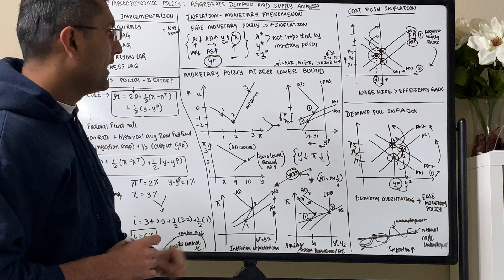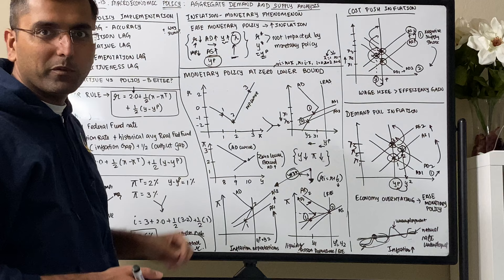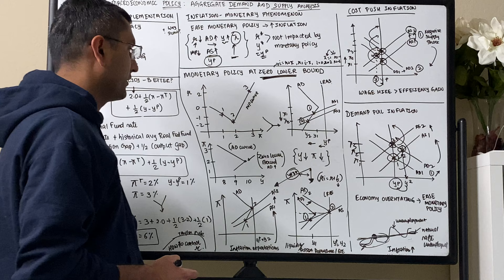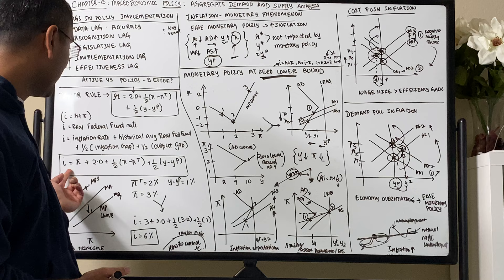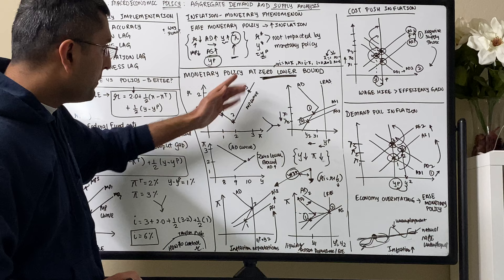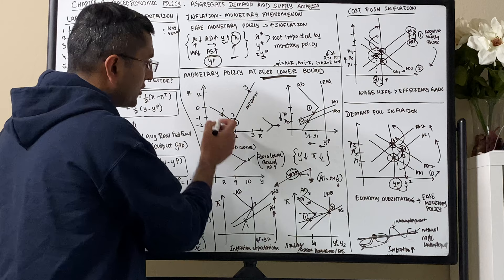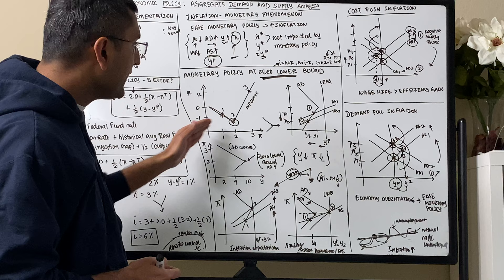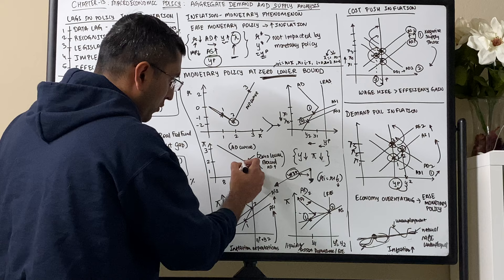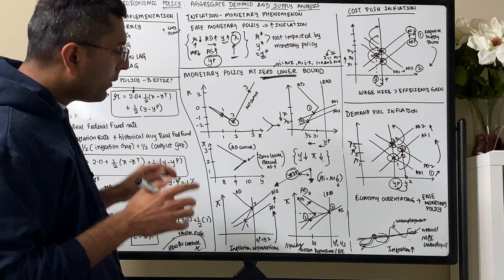Now the final topic of this chapter: what happens when I equals zero — the zero lower bound? When you can no longer go below zero, when I equals zero, the MP curve, which we know is normally upward sloping, becomes downward sloping at the zero bound. And the AD curve, which is normally downward sloping, becomes upward sloping post zero bound. How does this intuitively make sense? We use the equation I equals R plus pi, which means R equals I minus pi.